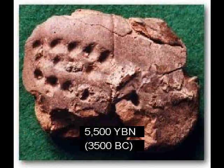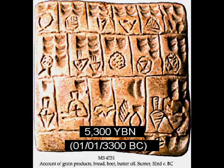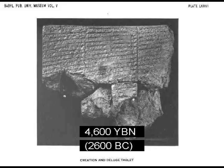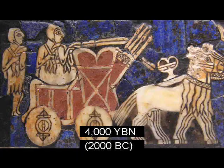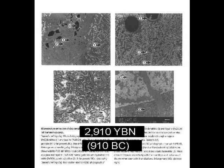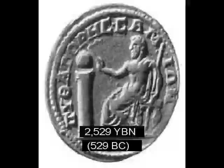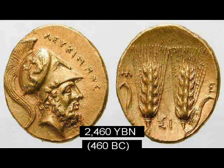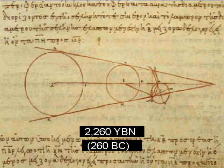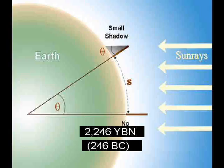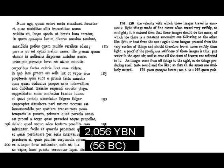Writing on clay tablets. First numbers. Symbols of the alphabet. Written story. Glass making. Horse-pulled vehicles. Lock and key. Iron casting. Earth described as a sphere. Theory of atoms. Rotation of Earth around itself and the sun understood. Size of Earth known. Paper. Theory that light is an atom.